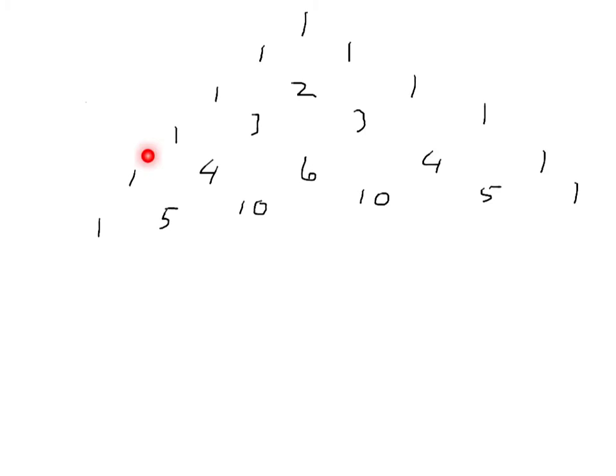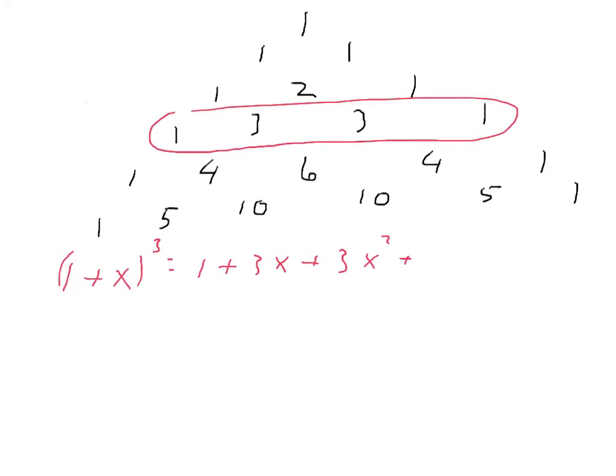Then it turns out that these numbers here are the coefficients in a certain expansion. So let's write down, say, this one here. So these numbers give you the coefficients in the expansion of the expression (1+x)³. It's 1 + 3x + 3x² + x³.